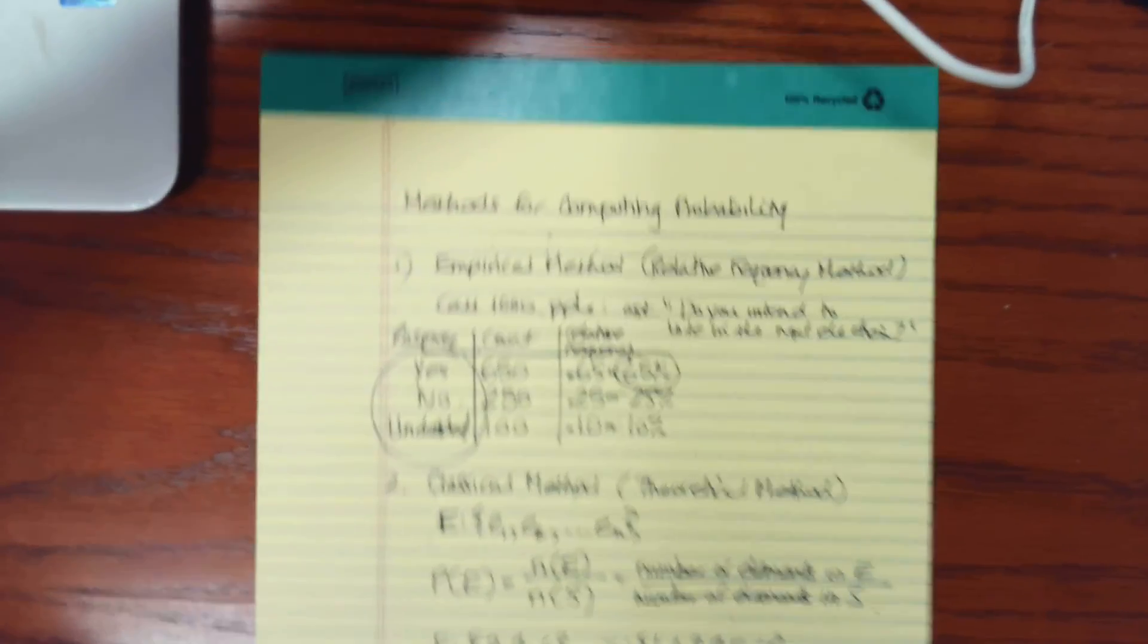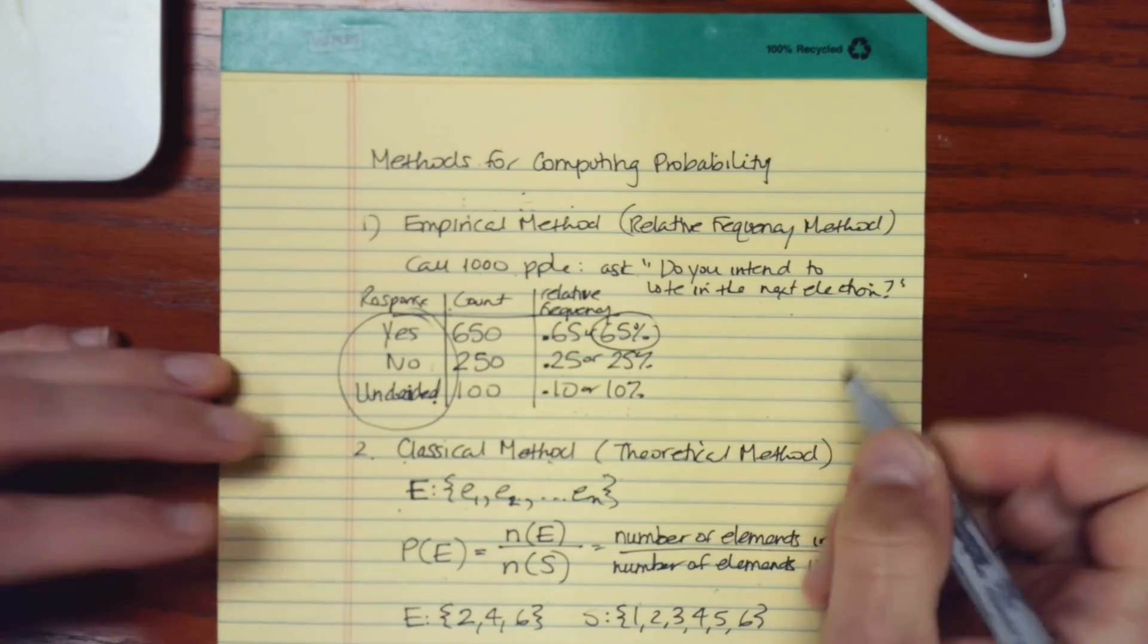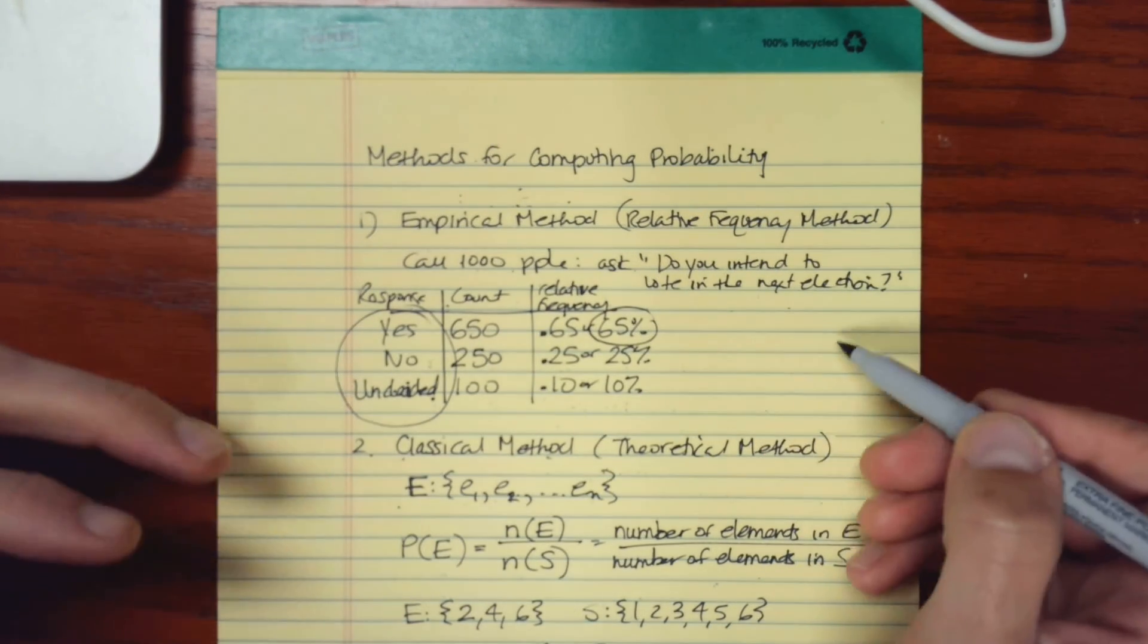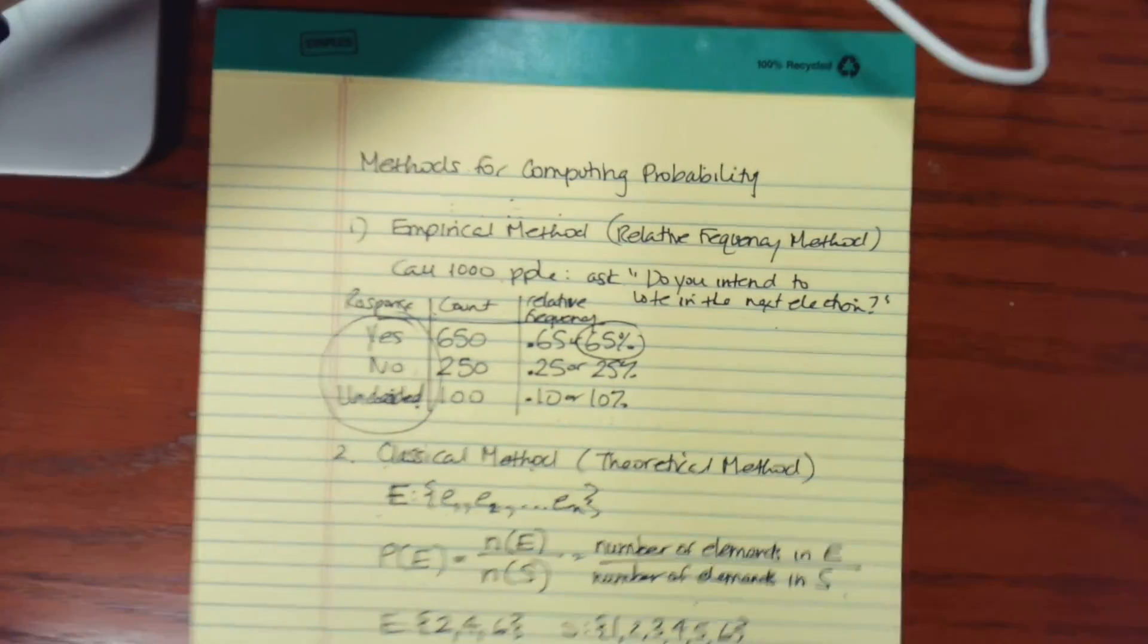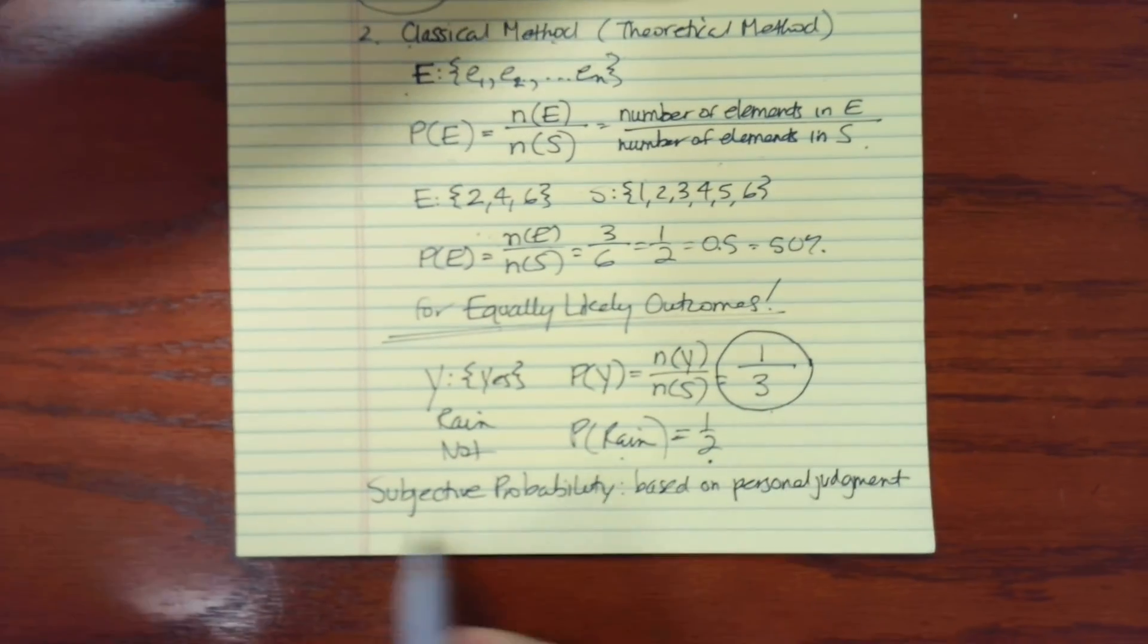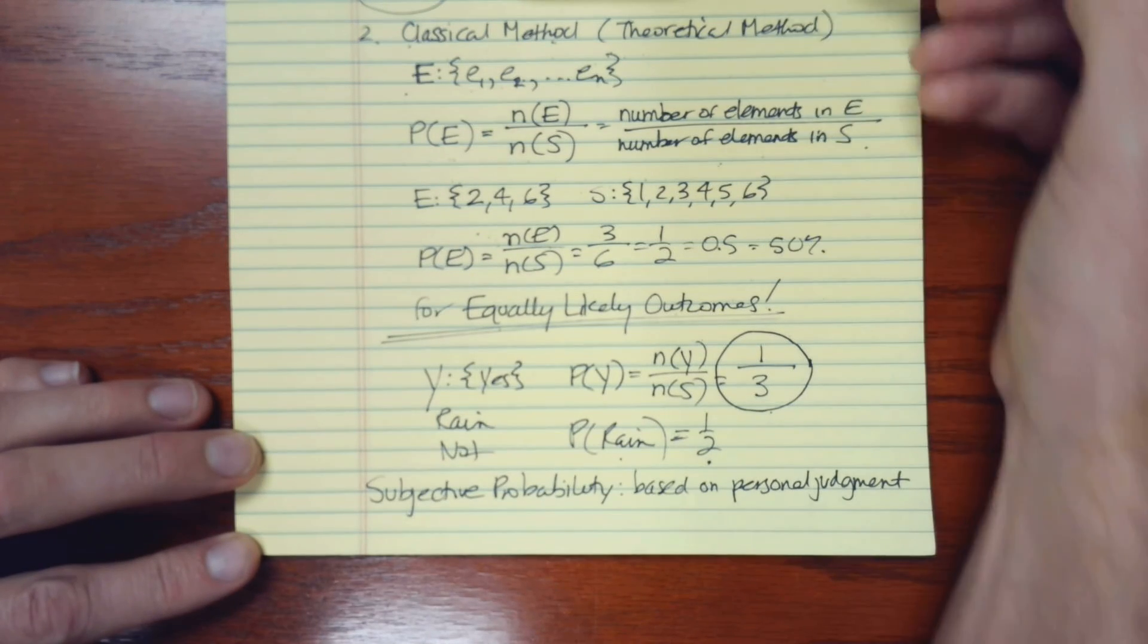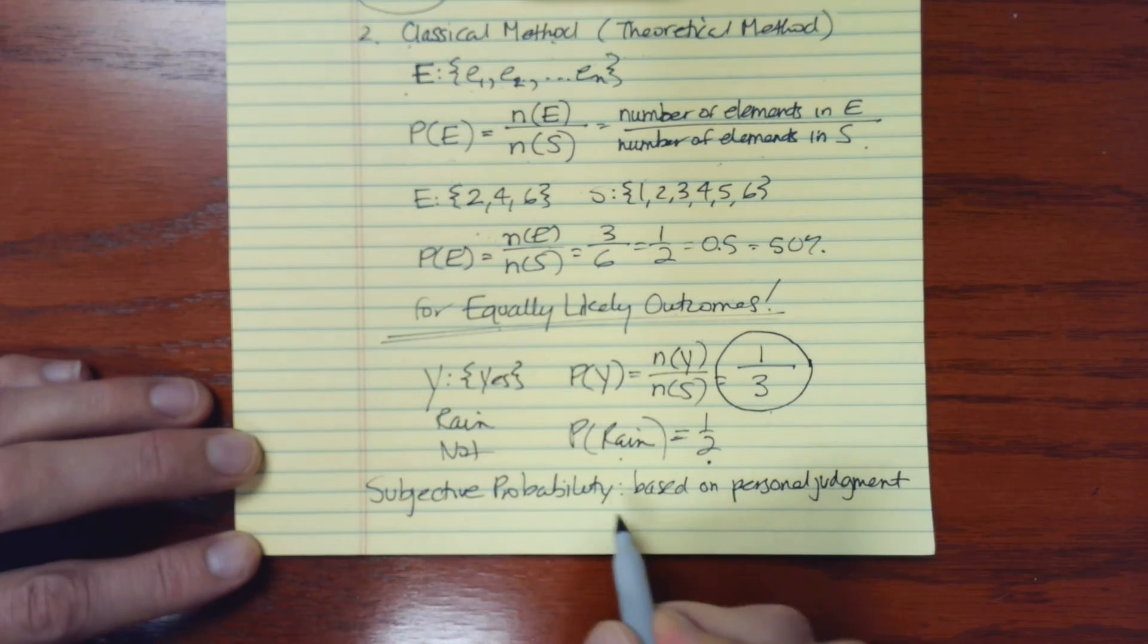They're not really using the empirical method unless they were to say these two teams have played 100 times before, and in those 100 matchups, Team A has won 60 percent of the time. If that was the basis for them making this judgment, then that would be using empirical method. But usually, when we say that someone is just using their personal judgment and it's not based on the empirical method or classical method, we say that that's subjective probability.